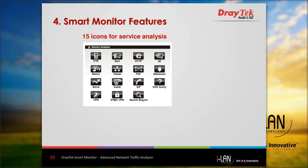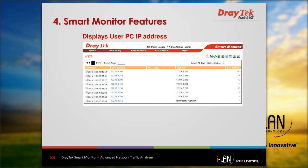These 15 icons provide quick shortcuts to look at a particular service. The services cover a range of applications such as mail, web downloads, peer-to-peer traffic, and so on. You simply double-click on an icon to display the results. For example, after double-clicking the HTTP icon, it displays the PC IP address or name if configured, and which websites have been accessed.